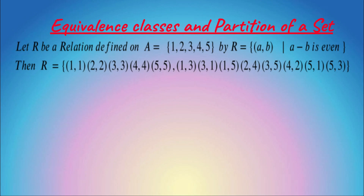Using that relation, R contains elements like (1,1), (2,2), (3,3), (4,5) — you can see that the difference of these two numbers is always even. For example, 3 minus 5 = -2, which is even; 4 minus 2 = 2, which is even. These are the elements of the relation, and it is very clear that it is an equivalence relation.